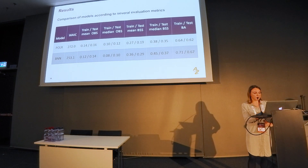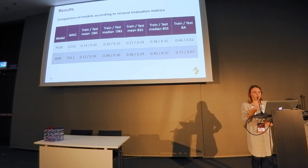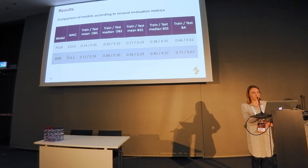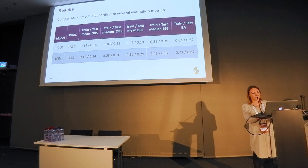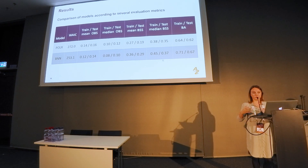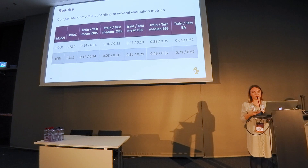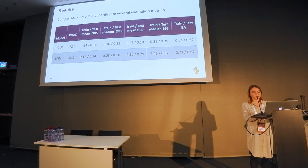Looking at the results: for information criteria we prefer the lower value — the Bayesian neural network wins over ordered logistic regression. For the Brier score, smaller is better, and again the numbers are smaller for BNN. For the Brier skill score, higher is better — meaning our prediction is closer to what we observe than the baseline — and again BNN is better.